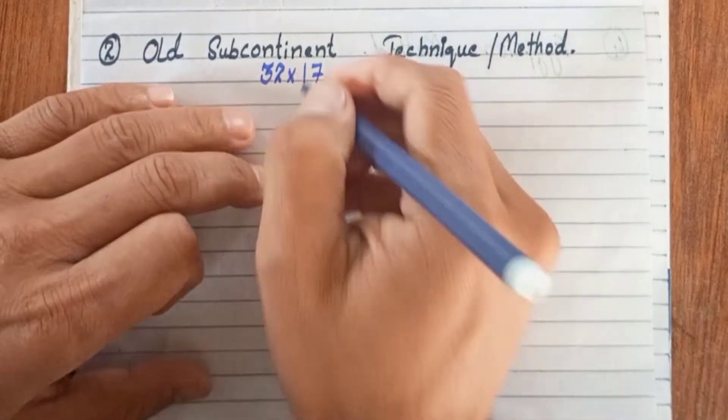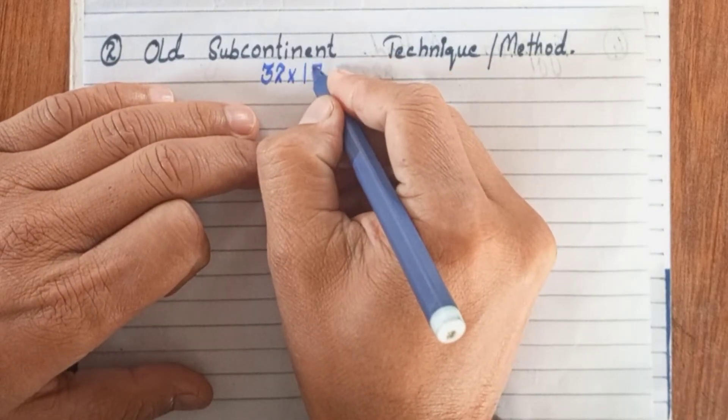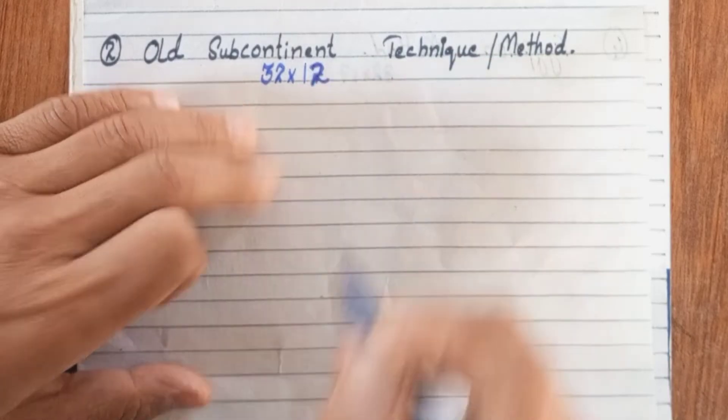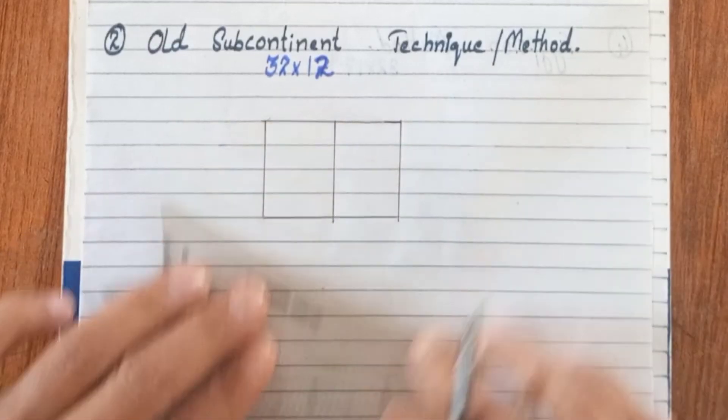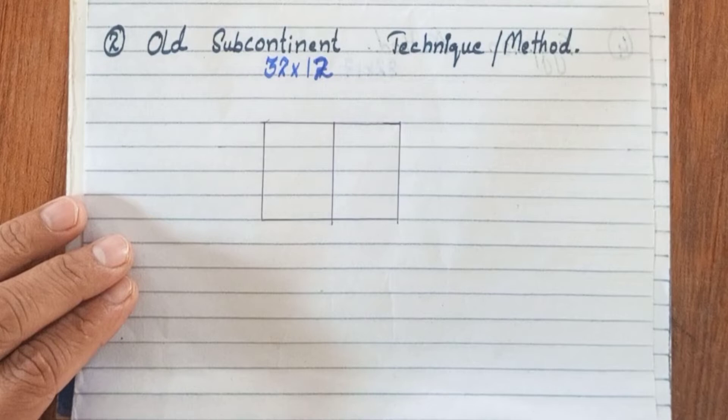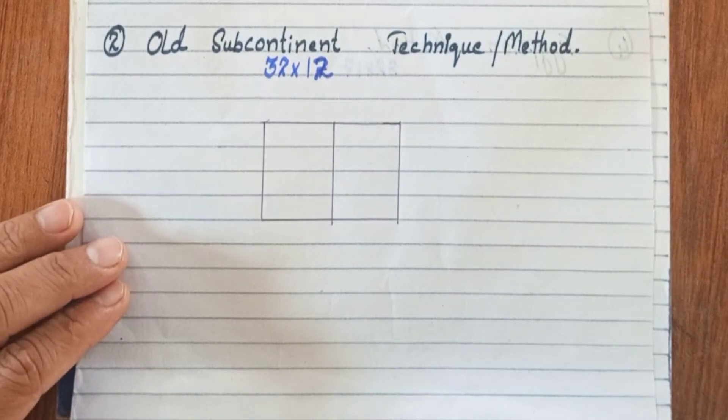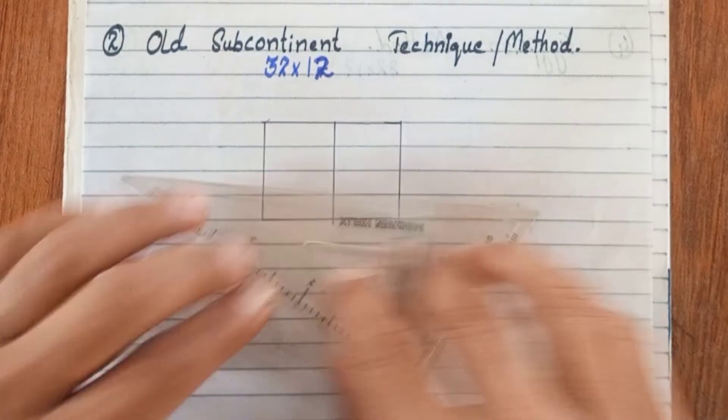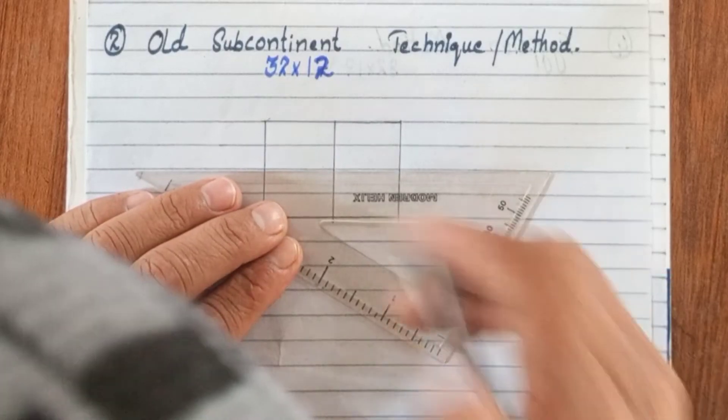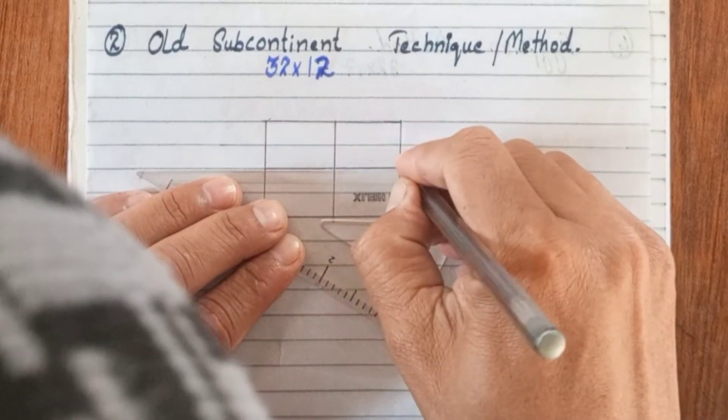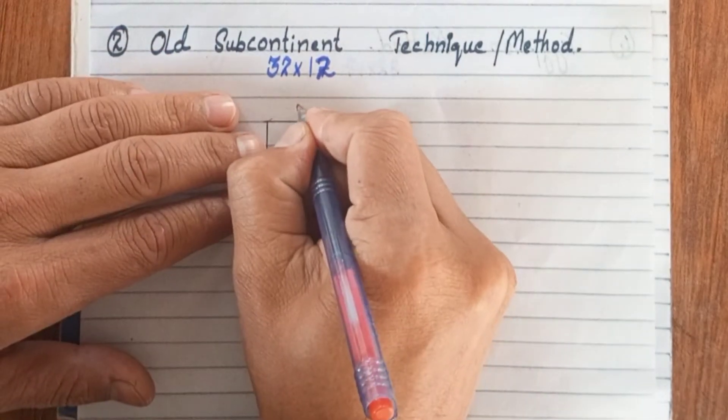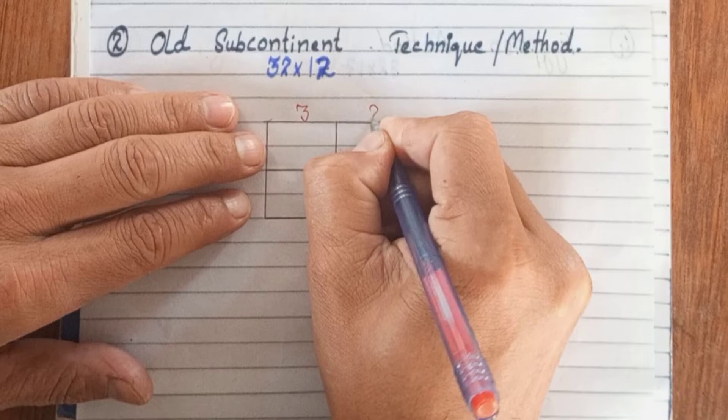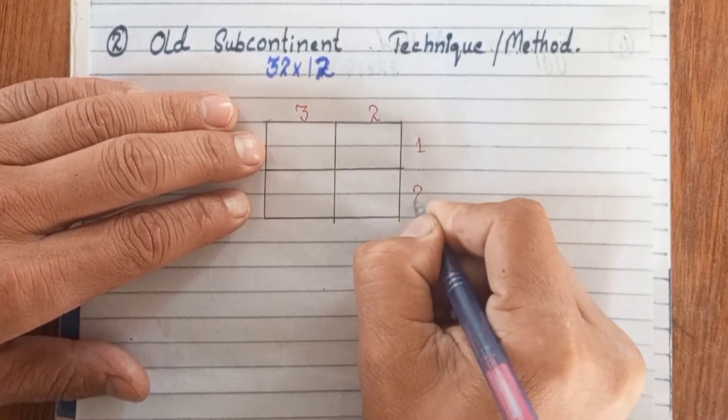The second technique we are going to discuss is the old subcontinent method. In this method, we have two digits in these two numbers, so we will take four columns. We will write 32 here and 12 here.